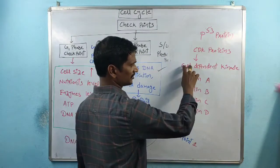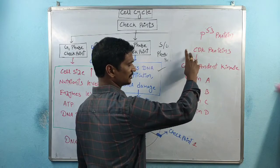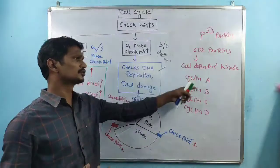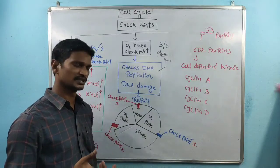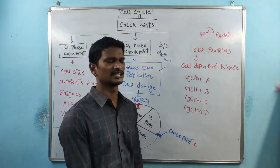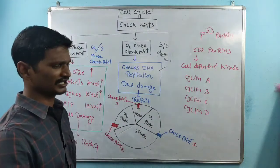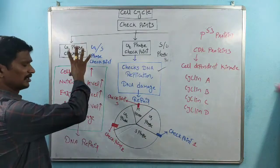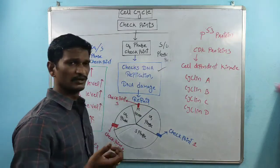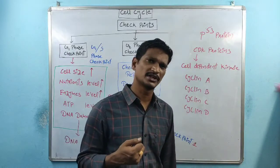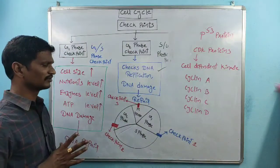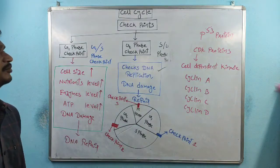The combination of CDK and cyclin proteins — whether Cyclin A, B, C, or D combined with CDK — regulates cell division. That is about the cell cycle and checkpoints. From this area, bits are given asking which one regulates cell division, or which checkpoint identifies whether chromosomes are attached to the spindle apparatus. This is a very important concept.